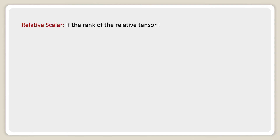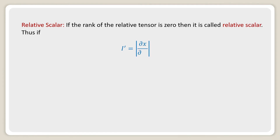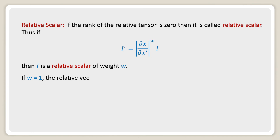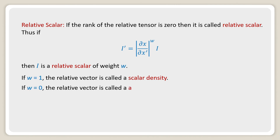Relative Scalar. If the rank of the relative tensor is 0, then it is called a relative scalar. Thus if I' equal to the Jacobian of (del x / del x') to the power w into I, then I is a relative scalar of weight w. If w equal to 1, the relative scalar is called a scalar density. If w equal to 0, the relative scalar is called an absolute scalar.